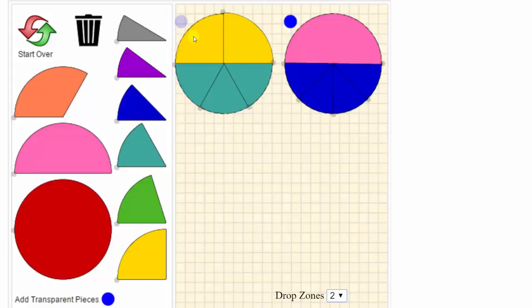If we go back to the first drop zone, we can now add transparent fraction pieces on top of the existing fraction pieces. Notice how we can still see the original fraction pieces under the new transparent fraction pieces.